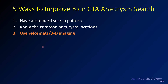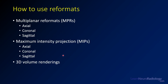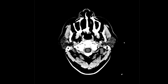Step number three to improving your aneurysm search: use your reformats and 3D imaging. These are supplemental tools that can help you confirm an aneurysm is there, and you can also use them to search specific areas to increase sensitivity. You typically have multi-planar reformats — thin slice data displayed in a different plane, available in all three planes. You also have MIPs, a special form of 3D reformat showing a thicker slice with the highest intensity voxel. And your final supplemental tool is 3D volume renderings, useful for measuring aneurysms and characterizing the abnormality.